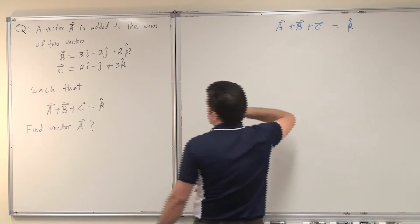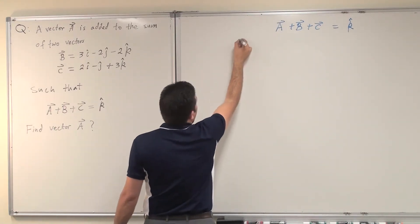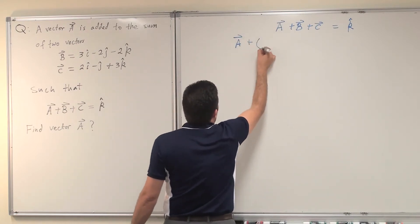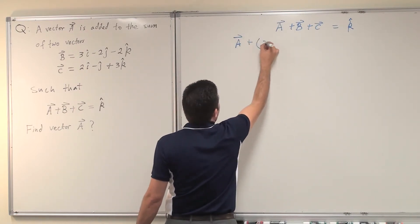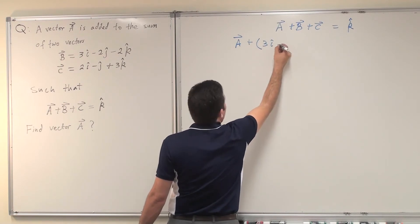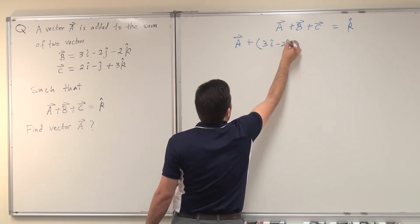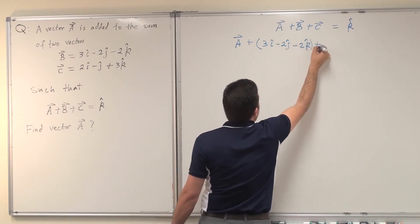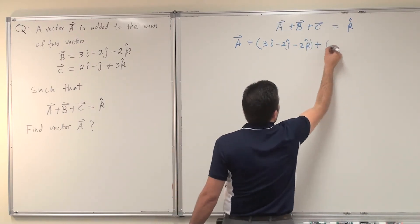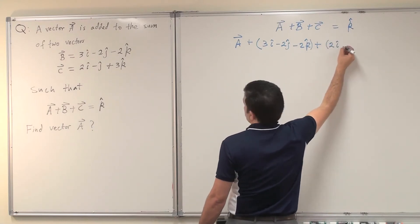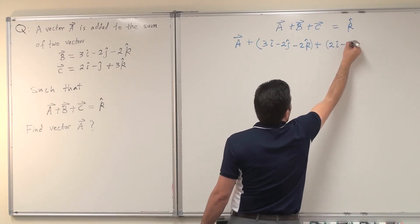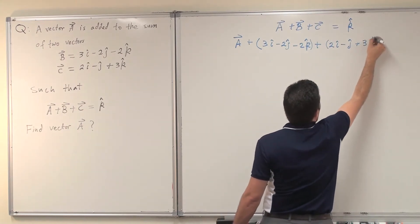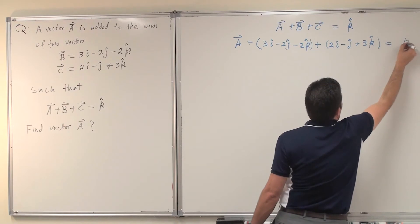Now I substitute for the vectors that I know. I don't know A, so I will leave it as it is. Then I will add vector B, which is 3i-hat minus 2j-hat minus 2k-hat, plus vector C, which is 2i-hat minus j-hat plus 3k-hat. This all should equal k-hat.